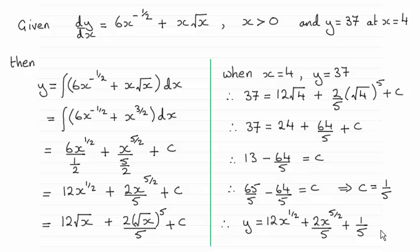So if you didn't get this I'll just take you slowly through it. We were given that dy/dx equals 6x to the minus half plus x root x, where x was greater than 0, and the values that y equals 37 at x equals 4. This is going to help us find the constant of integration, which I've called plus c.